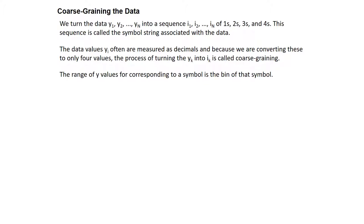Given our dataset — a sequence of real numbers y1, y2, y3, ..., yN, maybe daily temperature variation — we need to convert it into a sequence i1, i2, i3, ..., iN, where each number is one of 1, 2, 3, or 4 for a four-corner chaos game. This sequence is called the symbol string associated with the data. The whole dataset is reduced to a symbol string consisting of four different symbols. Since we are converting continuous decimal values into only four values, this process of turning y_k into i_k is called coarse graining.